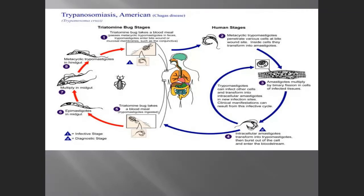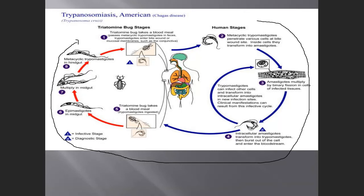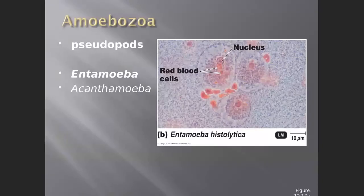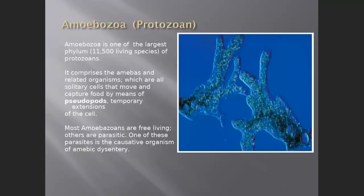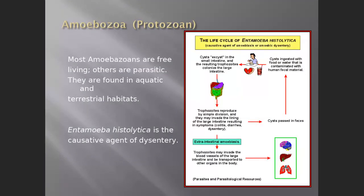Trypanosoma has a very complicated life cycle — parasites develop these complex life cycles as an evolutionary advantage, making them hard to eliminate. Moving on to the Amoebozoa, which move by pseudopoda: two important genera are Entamoeba and Acanthamoeba (along with Naegleria). Entamoeba histolytica can cause amoebic dysentery.